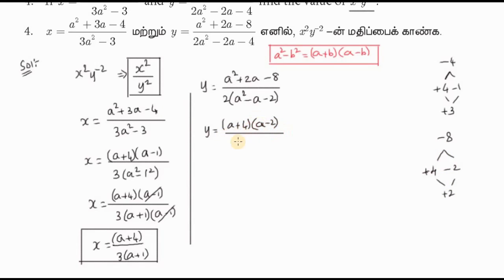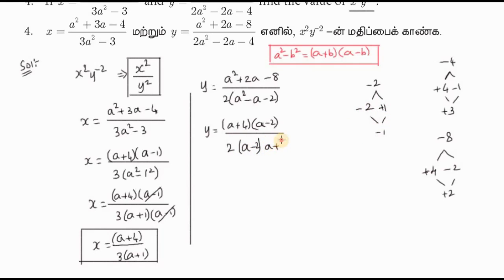The denominator: minus 2 equals minus 1 times minus 1, so a minus 2 equals a minus 1 into a plus 1. The a minus 2 terms cancel. Final value of y: a plus 4 divided by 2 into a plus 1.